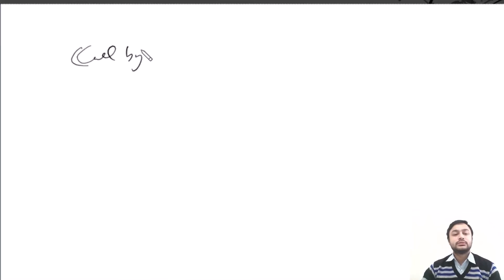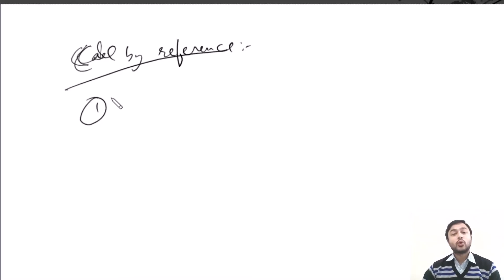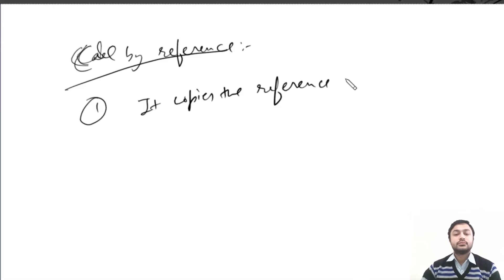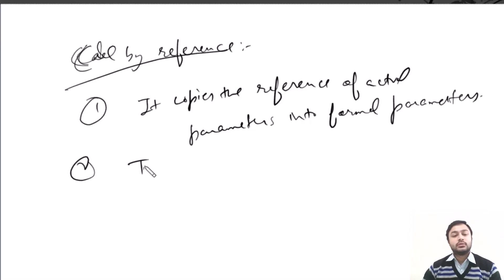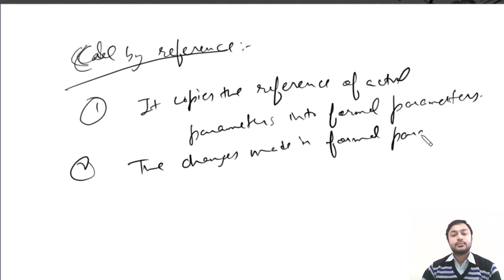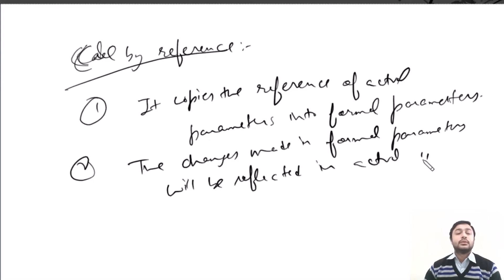In call by reference, the first point is that it copies the reference of the actual parameters into the formal parameters. The second point is that the changes made in the formal parameters will be reflected in the actual parameters. So whenever you make any changes in the formal parameter, it will reflect in the actual parameter.